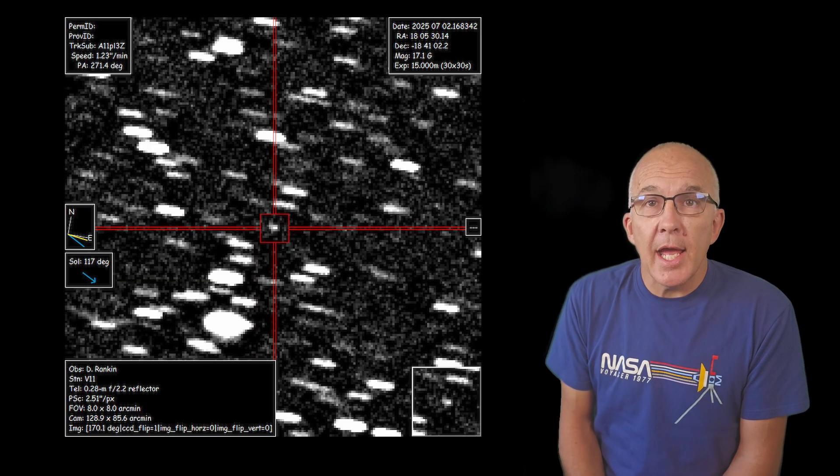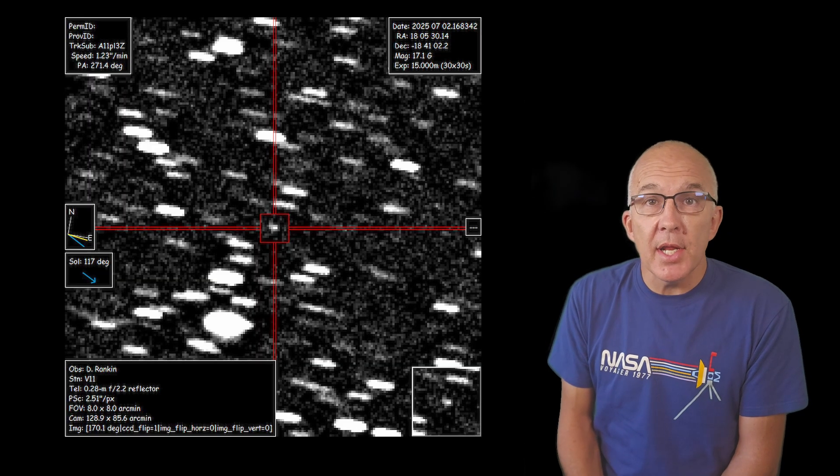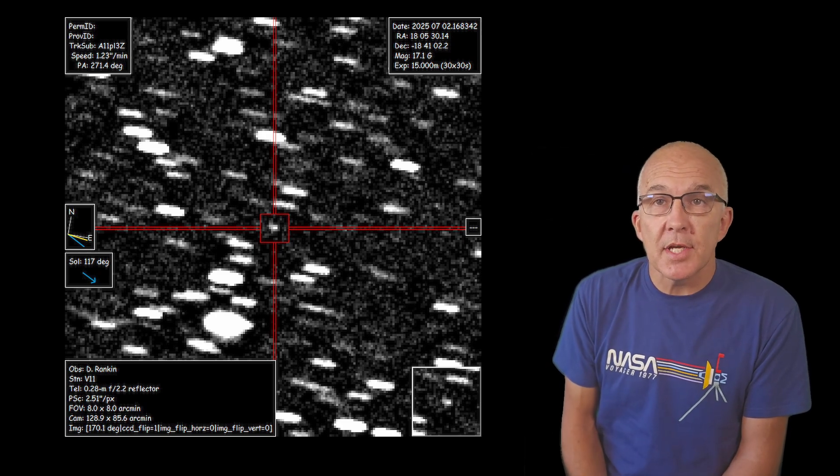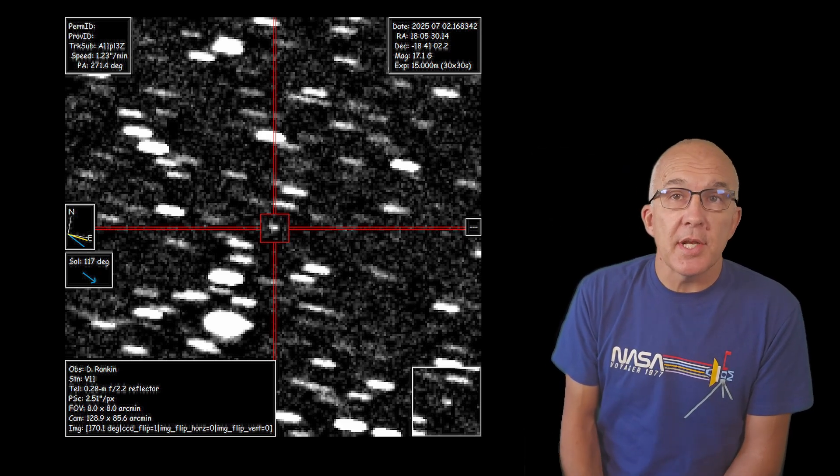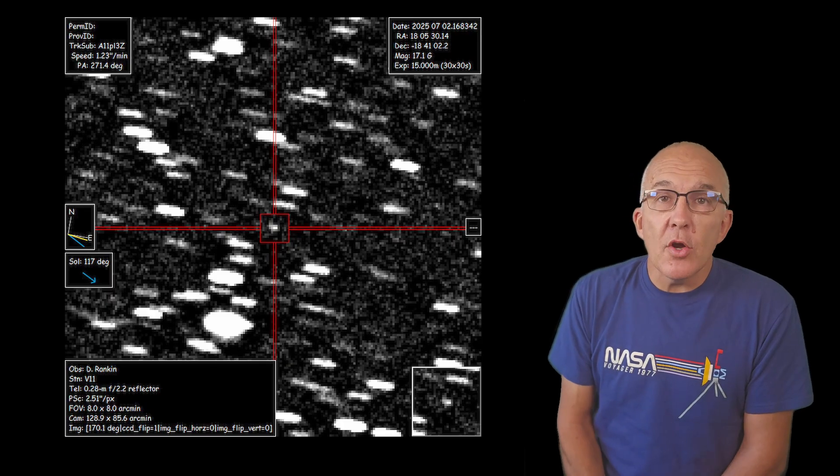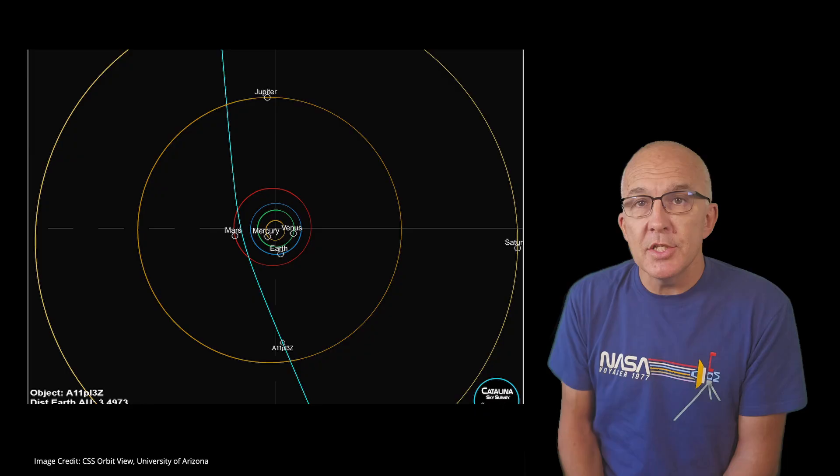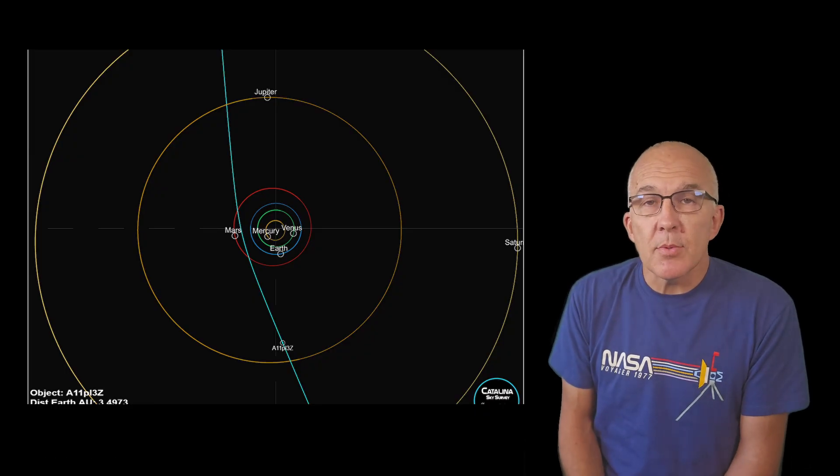Based on this orbit, we know that A11PL3Z originated from around another star, was flung out by that system by some sort of gravitational interaction, and is only visiting our solar system very briefly. The object poses no threat to Earth and will only have relatively close encounters with Mars later this year and Jupiter in March of 2026.